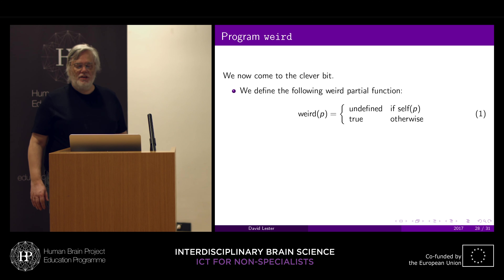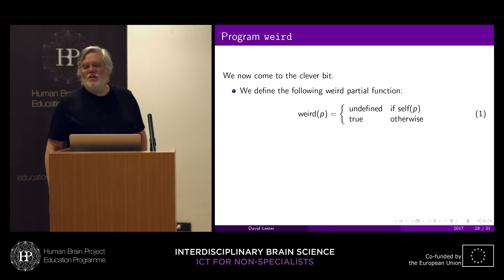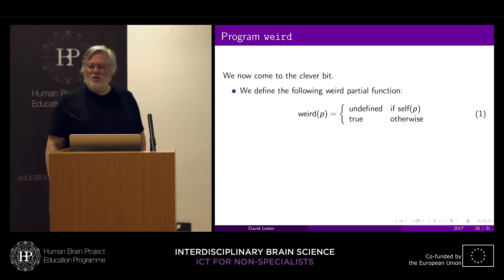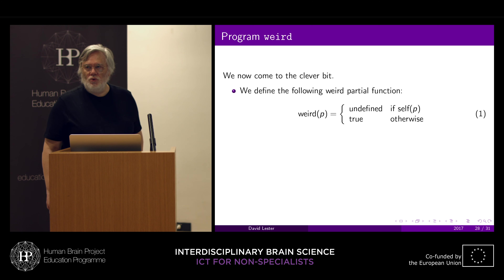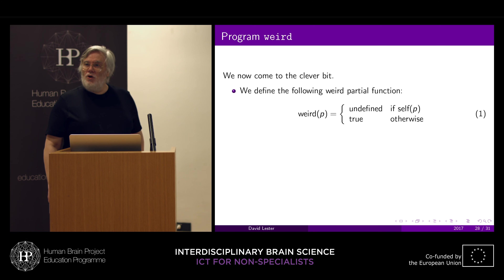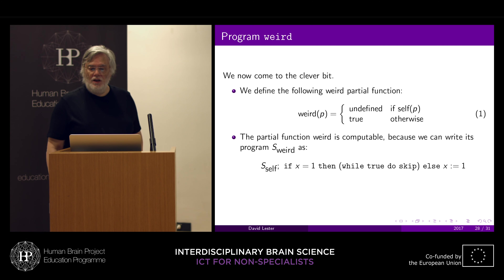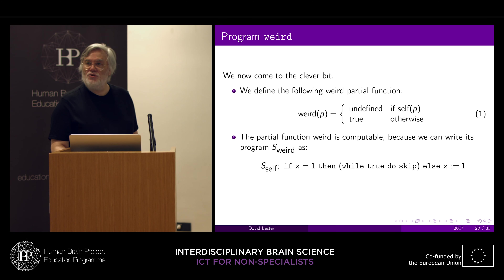Now we get the clever bit. We define the function 'weird' in this rather bizarre way. If you apply the program to itself and it halts with itself as its input, then we get undefined; otherwise, weird(P) returns true. So it's completely undefined if the program halts when given itself as its argument, and true otherwise. This partial function is computable because you can write it — we use 'while true do skip' to represent non-termination. So we can certainly write this program.